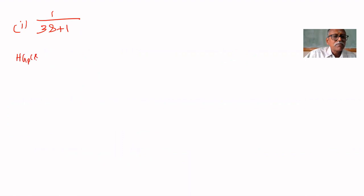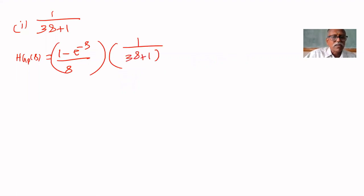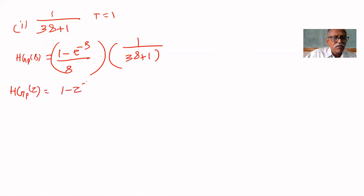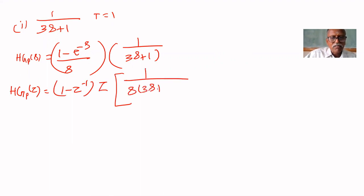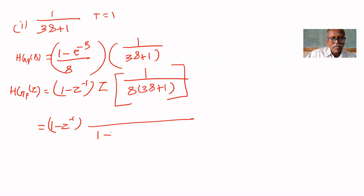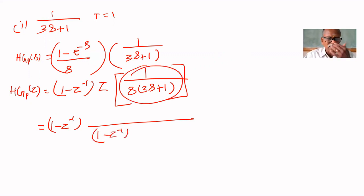What is HGP(s)? HGP(s) is equal to (1 - e^(-s))/s multiplied by 1/(3s+1). Assuming sampling period equal to 1, HGP(z) equals (1 - z^(-1)) times the Z-transform of 1/(s) multiplied by 1/(3s+1). That gives (1 - z^(-1)) multiplied by (1 - z^(-1)).